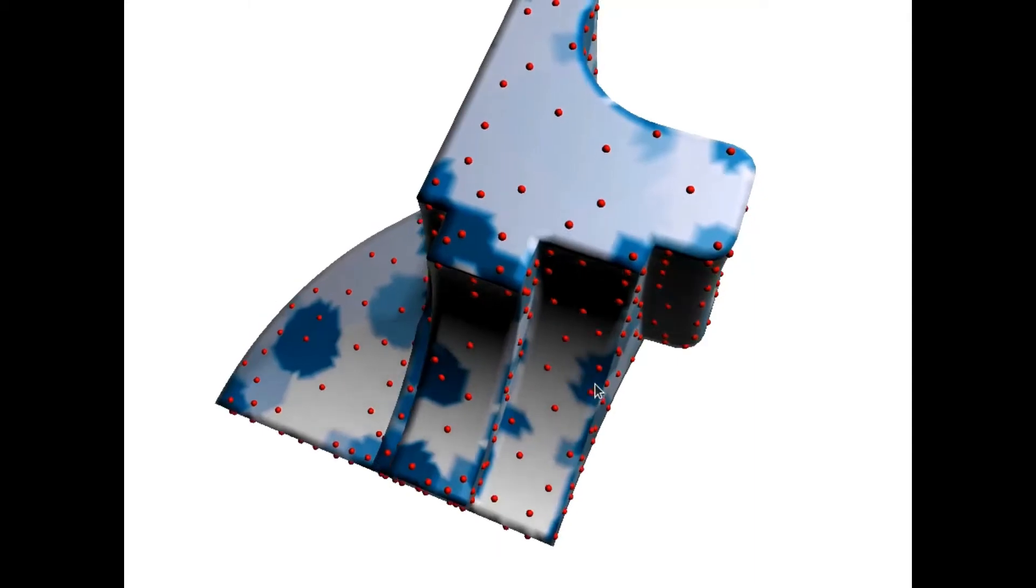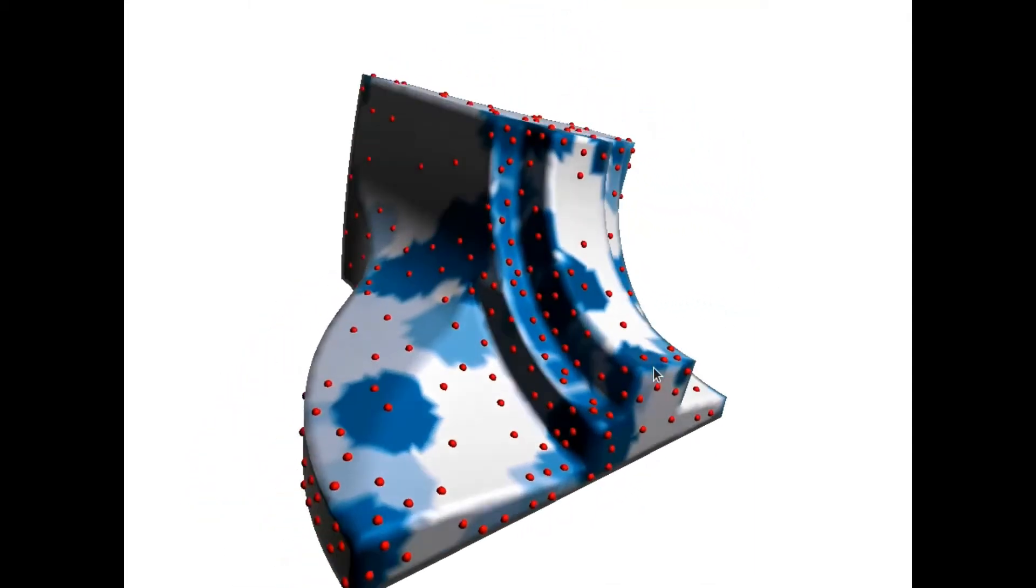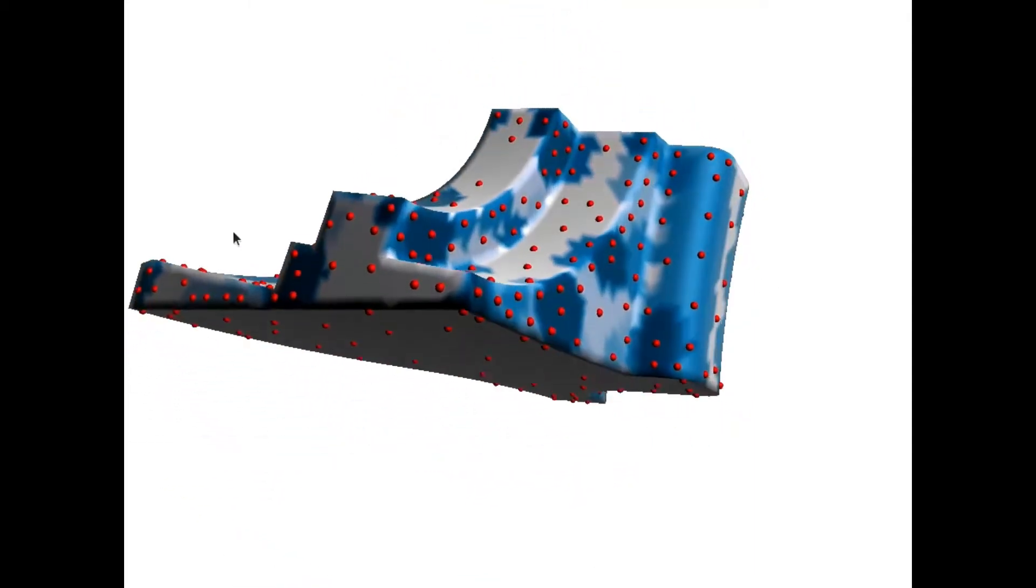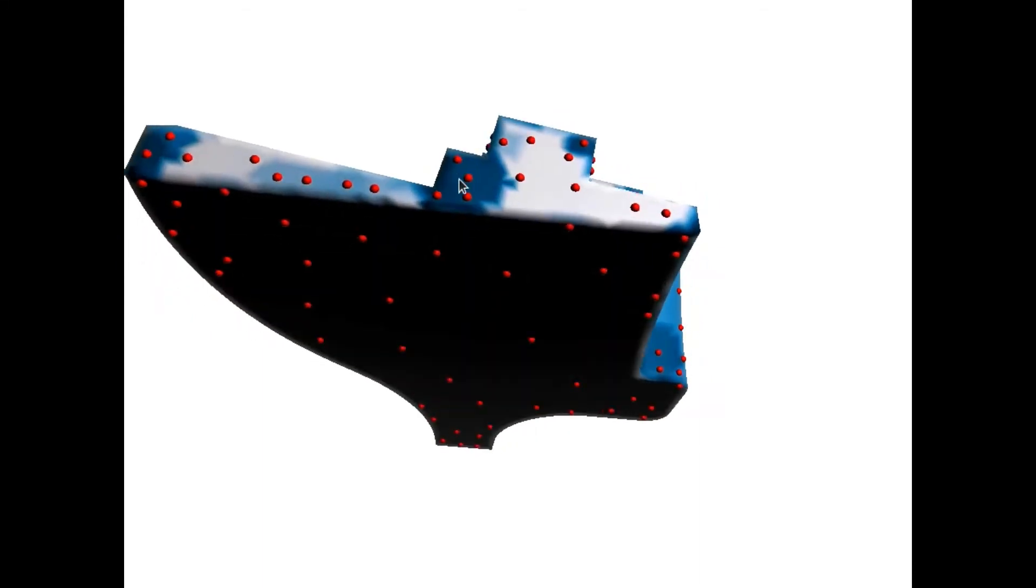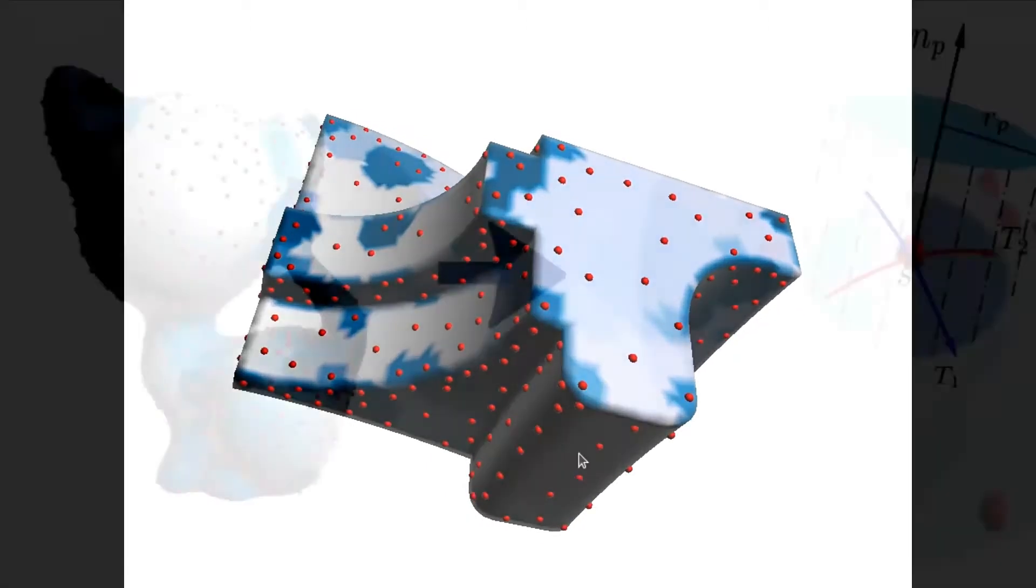This can create regions of variable sizes that are adaptable to the mesh curvature. Patches of bigger and smaller sizes are created in smooth and high curvature regions, respectively.